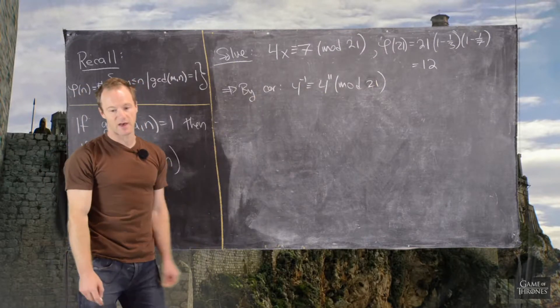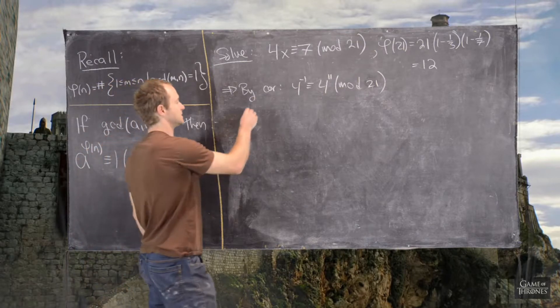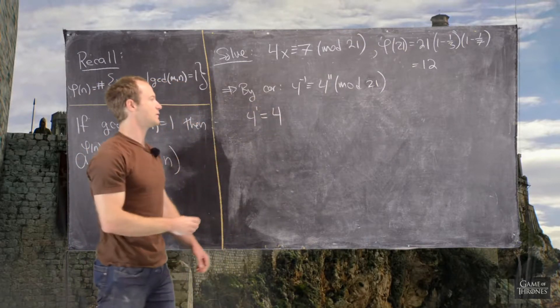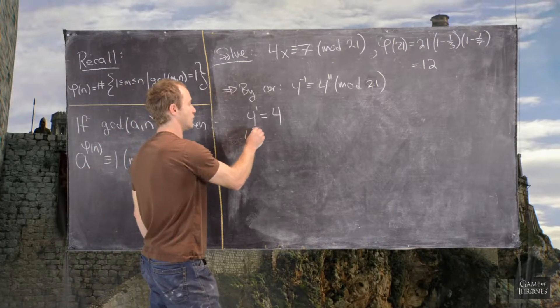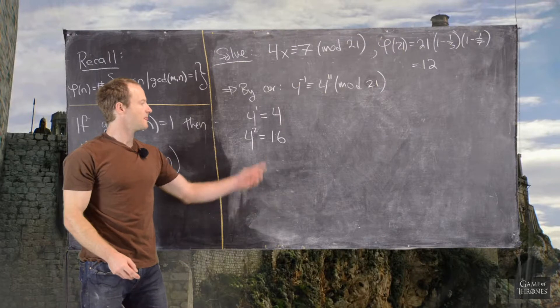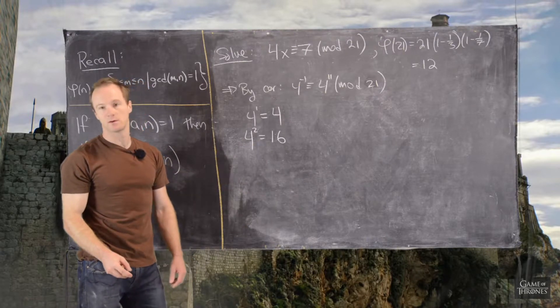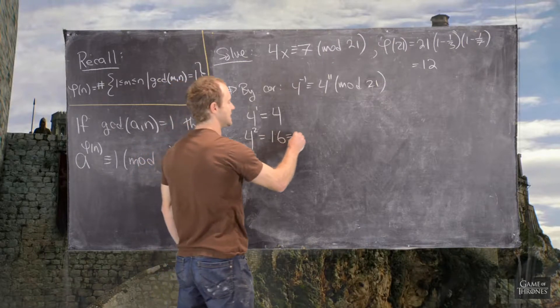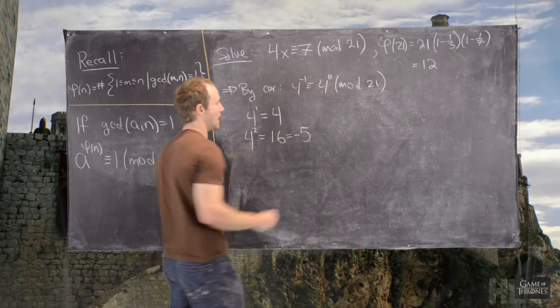So, let's do that by the method of repeated squares. So, we'll look at 4 to the 1 is equal to 4 mod 21. 4 squared is equal to 16 mod 21. But 16 is a bit bigger than we'd maybe like to work with. So, let's write this as negative 5 mod 21.